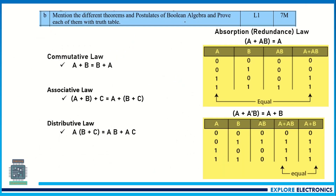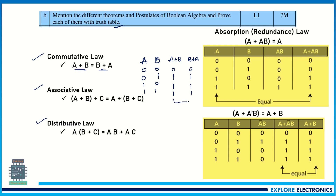The next question is: mention different theorems and postulates of Boolean algebra and prove each with a truth table. These are the commutative law, associative law, distributive law, and AND/OR laws. For example, to prove commutative law, take A and B values, write columns for A+B and B+A. A+B is OR of the two, giving 0,1,1,1; B+A also gives 0,1,1,1. You need to show these two columns match.